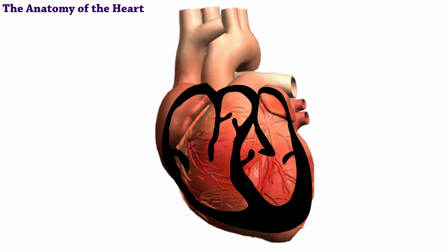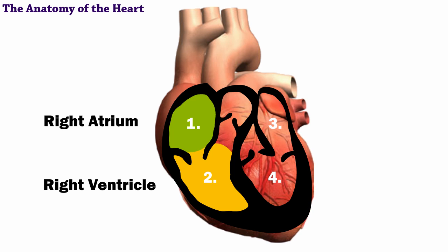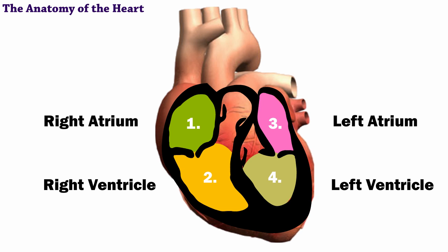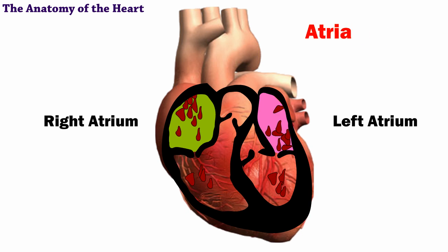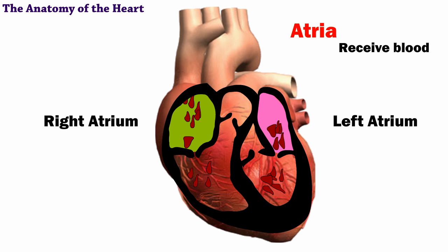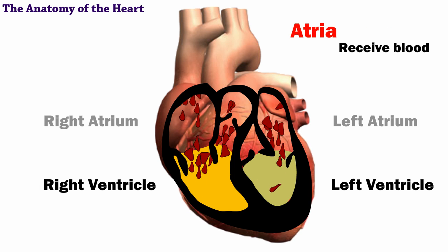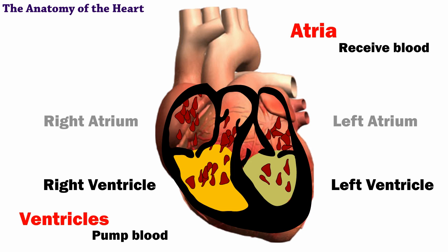Every heart has four chambers: the right atrium, the right ventricle, the left atrium, and the left ventricle. The two upper chambers, or atria, receive blood. The two lower chambers, or ventricles, pump blood.